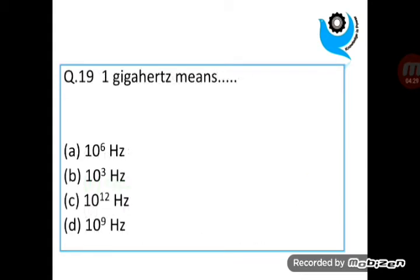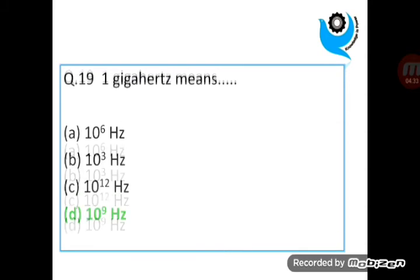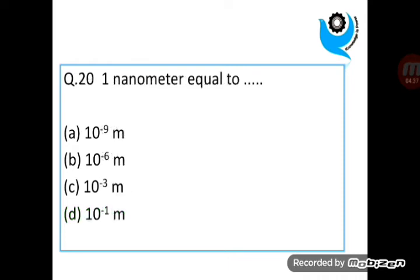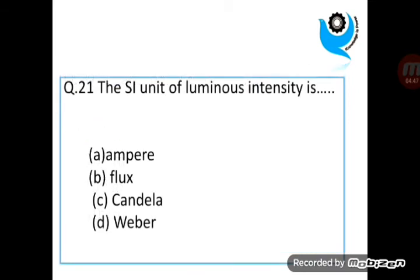Question 19. 1 gigahertz means 10 raised to 9 hertz. Question 20. 1 nanometer equals 10 raised to minus 9 meters. Question 21. The SI unit of luminous intensity is candela.